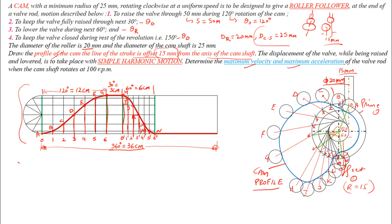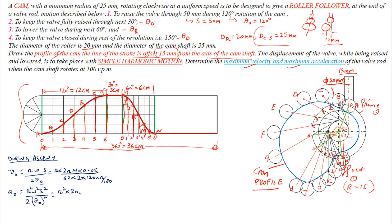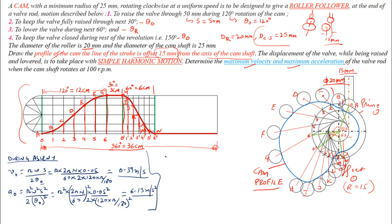Now find the maximum velocity and maximum acceleration during rise of the follower using the standard SHM formulas. Remember that theta here is the angle of rise, which is 120 degrees and must be converted to radians before substituting values. After putting in all the parameter values, the maximum velocity during ascent is 0.39 m/s and the maximum acceleration during ascent is 6.13 m/s².